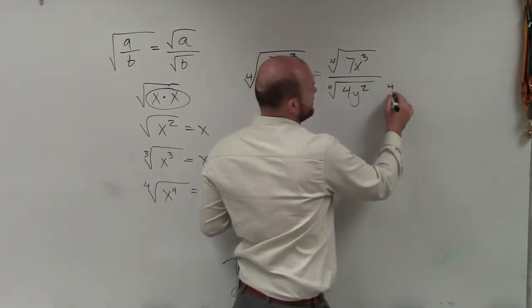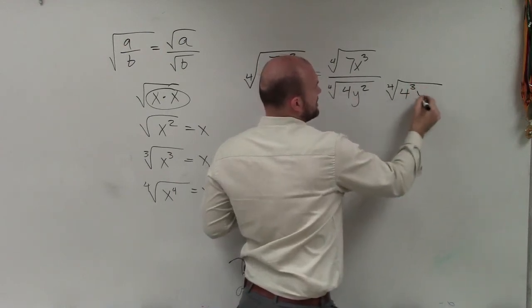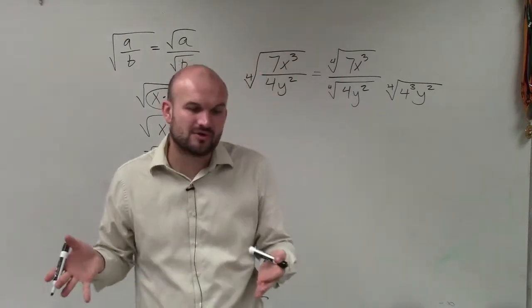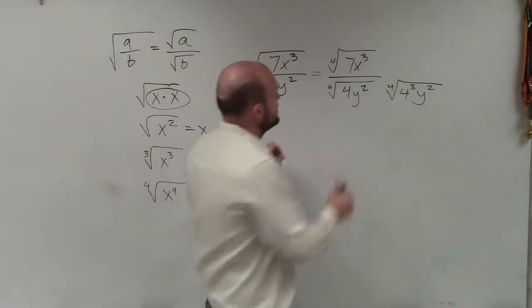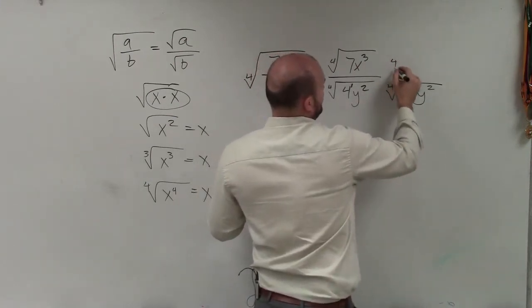I need to take the fourth root of 4 to the fourth power and y to the fourth power. So therefore, the number that I'm going to multiply by is going to be 4 cubed times y to the second. Because remember, when you multiply numbers with powers, you add the powers, right? So this has a 1 up there, 1 plus 3 is 4, 2 plus 2 is 4.